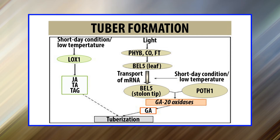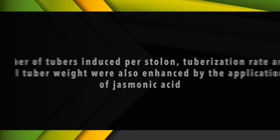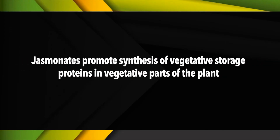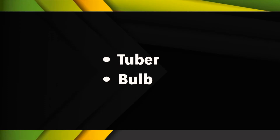Jasmonic acid and its methyl ester have been proven to be strong tuber-inducing compounds in potato. Jasmonic acid is a strong promoter of stolon tuberization; the number of tubers induced per stolon, tuberization rate, and final tuber weight were also enhanced by application of jasmonic acid. Tuberonic acid, a glycone of a potato tuber-inducing substance isolated from potato leaves, has been found to be closely related to jasmonic acid. Jasmonates also promote synthesis of vegetative storage proteins in vegetative parts of the plant, which are synthesized when nutrient supply exceeds demand and are later utilized in seed development or formation of storage organs like tubers and bulbs.